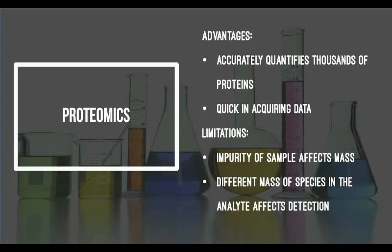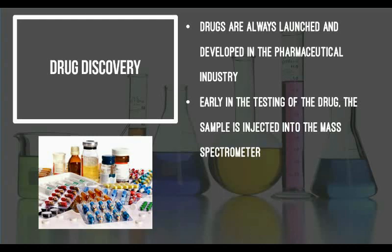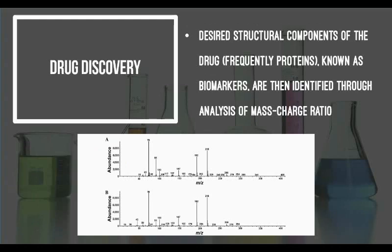In addition, mass spectrometry is also an application when it comes to drug discovery. Mass spectrometry is widely used in the pharmaceutical industries for drug discovery. Drug discovery is the process by which potential new medications are discovered for use in treatments. Early in the testing of the drug, the sample is injected into the mass spectrometer. Certain biomolecular structures of the drug are identified through analysis of their mass charge ratio. These special structures are known as biomarkers and are often protein complexes, such as enzymes. By confirming the presence of these biomarkers, scientists know that the drug will have its intended use in future test runs.